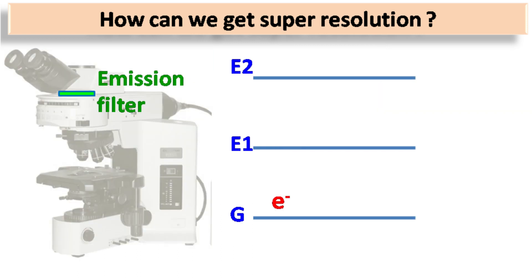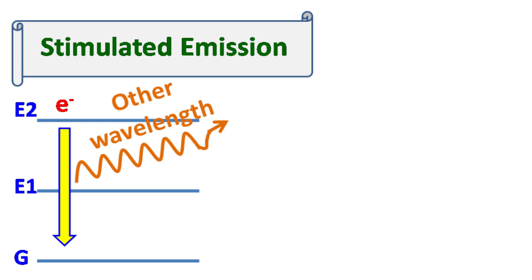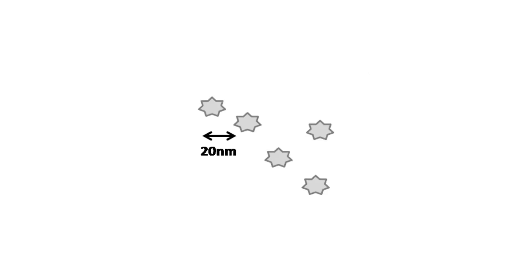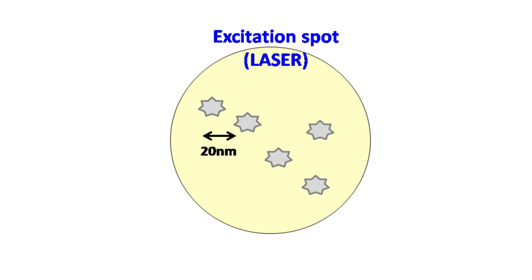The microscope has an emission filter that allows only one wavelength to pass while other wavelengths are blocked. In this case, the filter allows only green light to pass while it blocks the other wavelength. As the other wavelengths are blocked, this fluorescence is no longer detected — and hence it is called fluorescence depletion. In fluorescence depletion, the excitation laser focuses on the specimen, and as a result the fluorescent molecules within the range of the excitation spot give fluorescence.